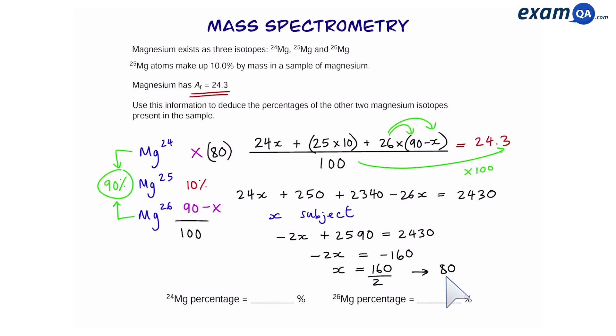So if x equals 80 for Mg-24, that means 26 must be 90 take away 80, which is 10. And there we have the relative abundance of the two different isotopes.